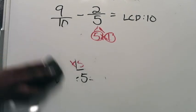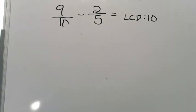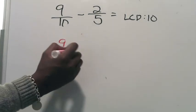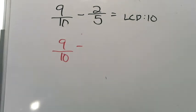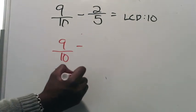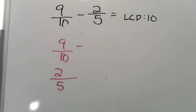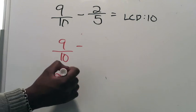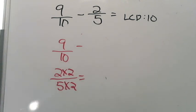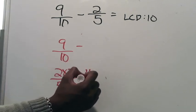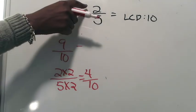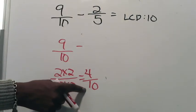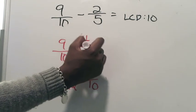My LCD is 10. Lucky for me, 9/10 already has a denominator of 10, so I bring it straight down. For 2/5, I ask: 5 times what equals 10? That's 2. I multiply the denominator by 2 and the numerator by 2 as well: 2 times 2 is 4, 5 times 2 is 10. So 2/5 becomes 4/10. Instead of subtracting 2/5, I'm now subtracting 4/10.